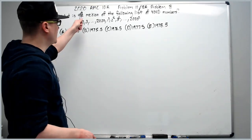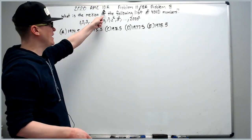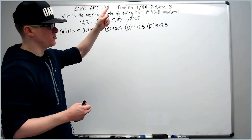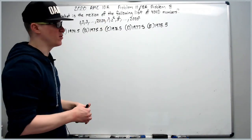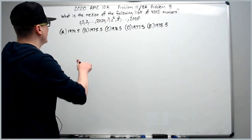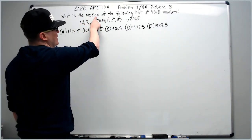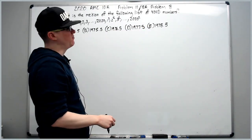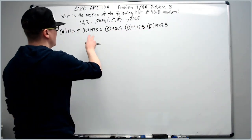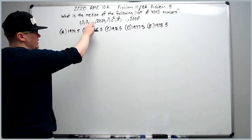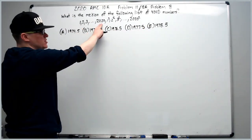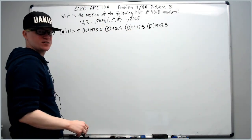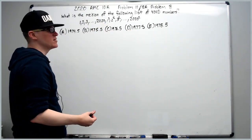Alright, and now for the 2020 10A problem number 11, which was also the 12A problem 8. What is the median of the following list of 4040 numbers? You have 1 to 2020 followed by all the squares from 1 squared to 2020 squared.